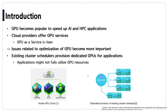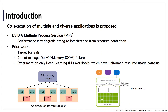Traditional cluster schedulers provide dedicated GPUs for applications. As you can see in the figure on the right, Kubernetes allows an application to monopolize a GPU. However, internal GPU resources continue to increase, while general-purpose applications do not fully utilize those resources. To solve this problem, co-execution of multiple and diverse applications is proposed.